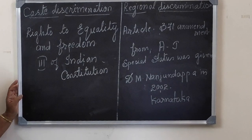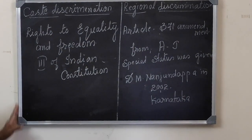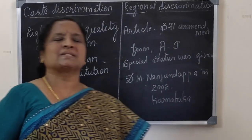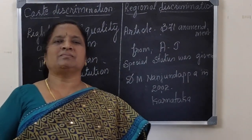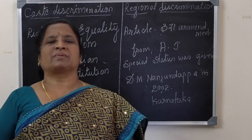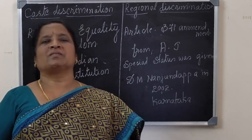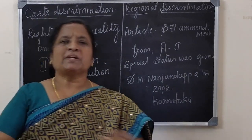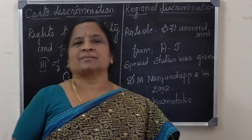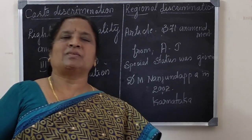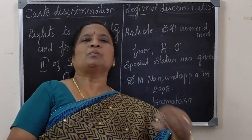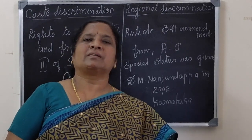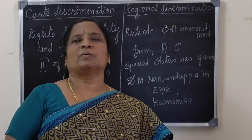Next we are going to learn about caste discrimination. In our extended classes, you have learnt there was a caste system — the Varna system — such as Brahmanas, Kshatriyas, Vaishyas, and Sudras. Occupation was based on the caste system, and the people who belonged to higher classes had better occupations than those who belonged to lower classes.